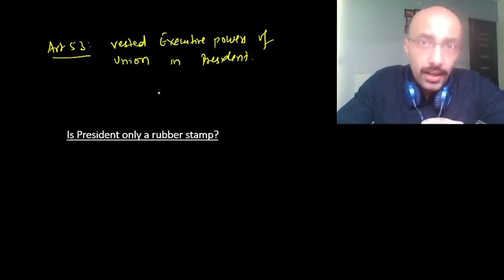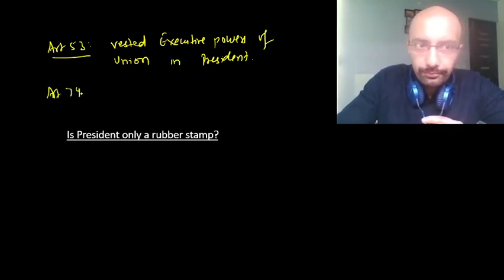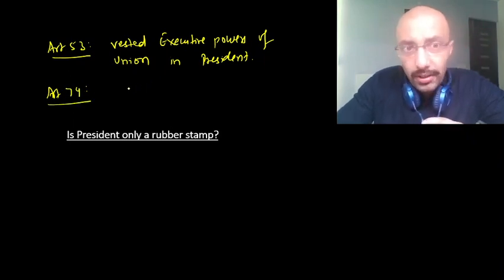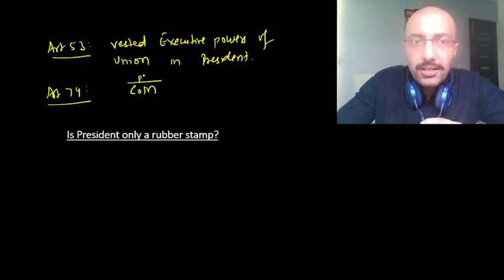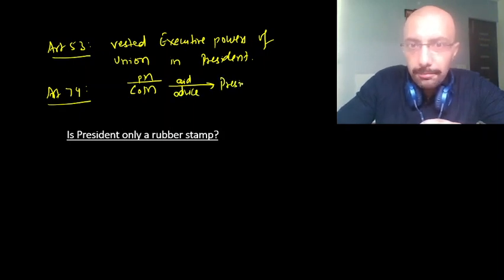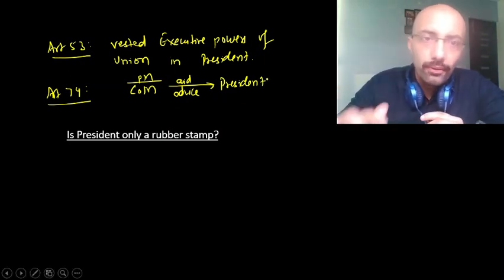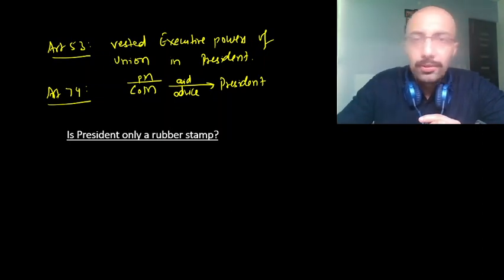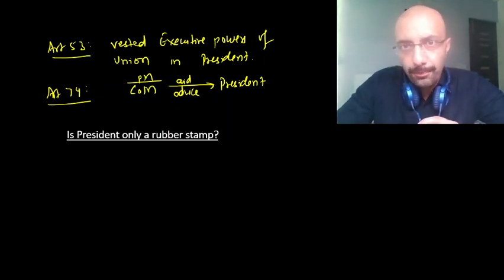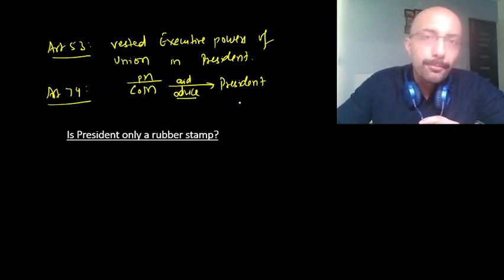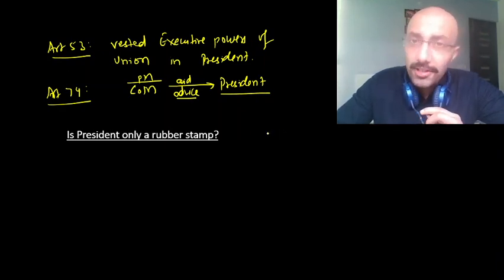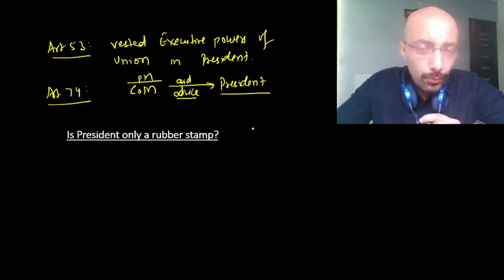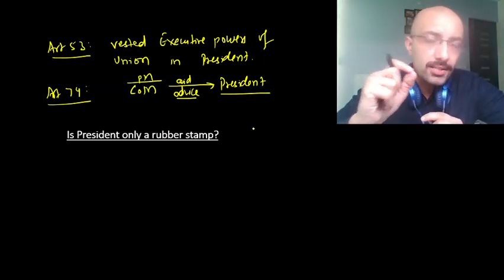there is another article — Article 74 — which says that there shall be a Council of Ministers headed by the Prime Minister to aid and advise the President in his executive functions. The question which came up immediately after the Constitution came into existence was: is this aid and advice binding on the President? If it is binding, does it mean that the President has to act even on an advice which is unconstitutional?